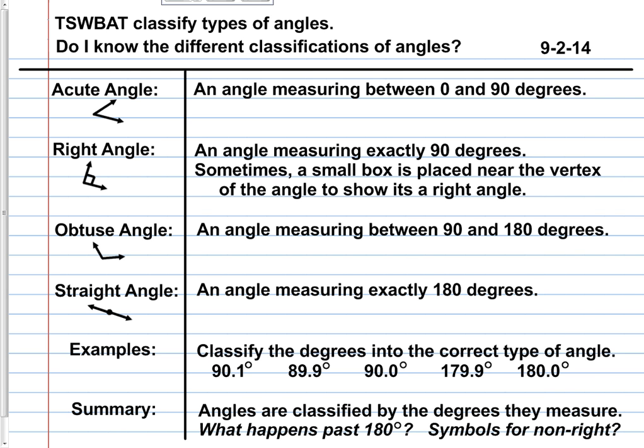So over on the right-hand side, you have the supporting information. Acute angle, the term on the left, the definition is an angle measuring between zero and 90 degrees. Over on the left, right angle, on the right, an angle measuring exactly 90 degrees. And hey, there's some more important information about a right angle. So we write that down too. Sometimes a small box is placed near the vertex of the angle to show us that it is a right angle. That's the way the right side of the page works. Examples were provided in the notes, so they were copied down.